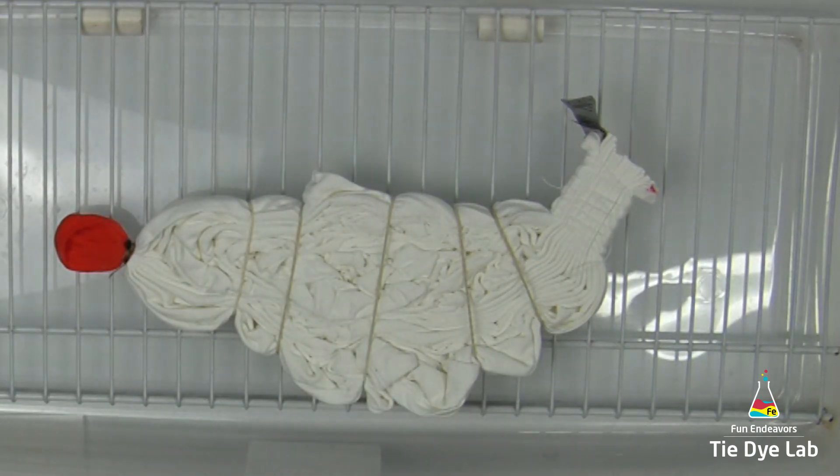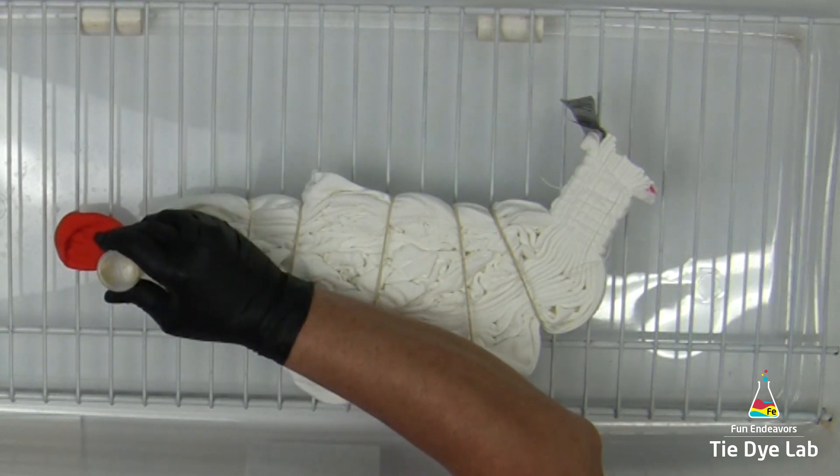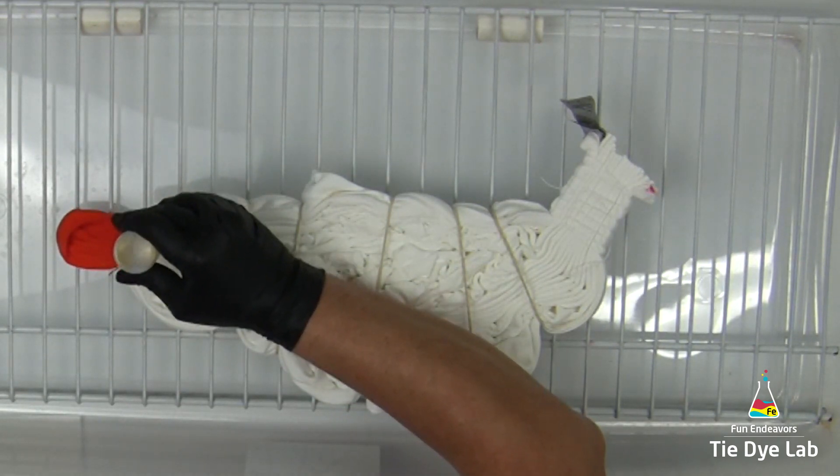For the pumpkin area, I'm going to use orange MX2R from Custom Colors. And I want to make sure I get the orange saturated, but I don't want it over saturated because I don't want it to run a lot. Right outside of the orange for the pumpkin, I'm going to add Lemon Yellow from Grateful Dyes.